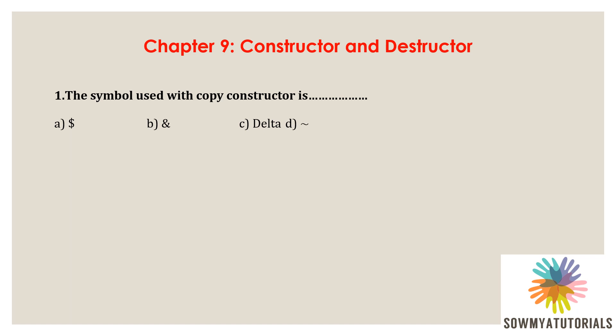The copy constructor is a parameterized constructor using which one object can be copied to another object. Copy constructors can accept only a single argument of a reference to the same class type. The argument must be passed as a constant reference type, indicated by the ampersand symbol — address of. So the correct answer is option B, ampersand symbol.